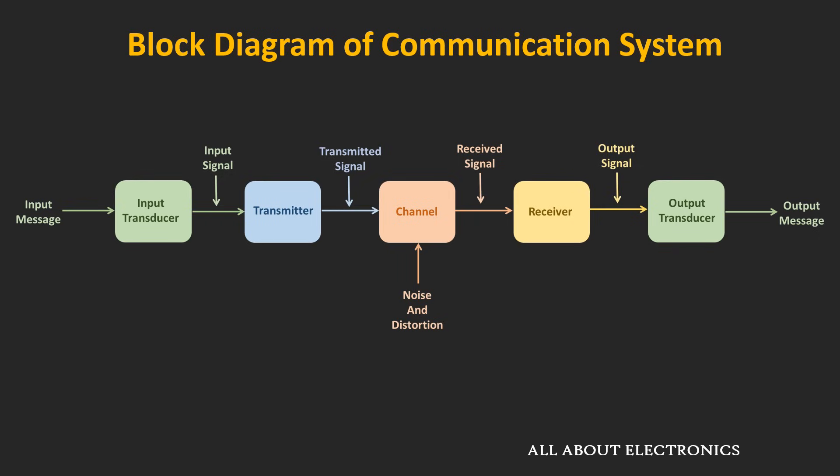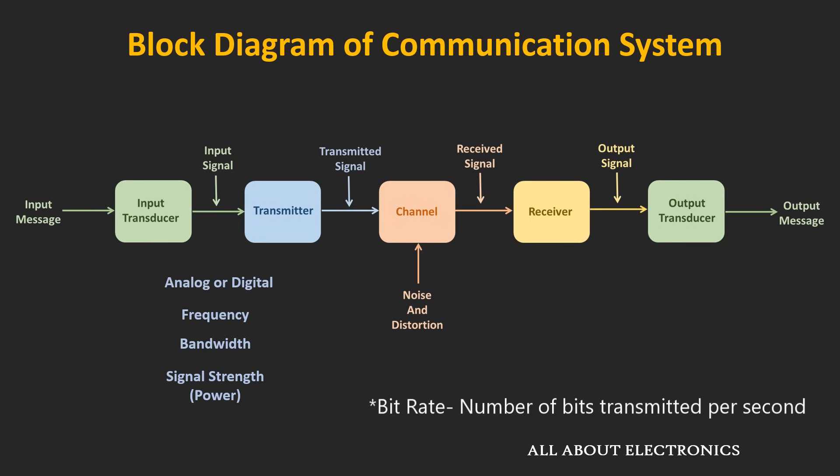When we talk about the transmitted signal, we need to know certain characteristics: whether it is analog or digital, what is the frequency of the signal, and if it contains multiple frequencies, what is the range — or in other words, the bandwidth of the transmitted signal. If the signal is transmitted in digital form, we also need to know the data rate or bit rate. Another important aspect is the power level of the signal, as that determines how far the signal can be transmitted faithfully.